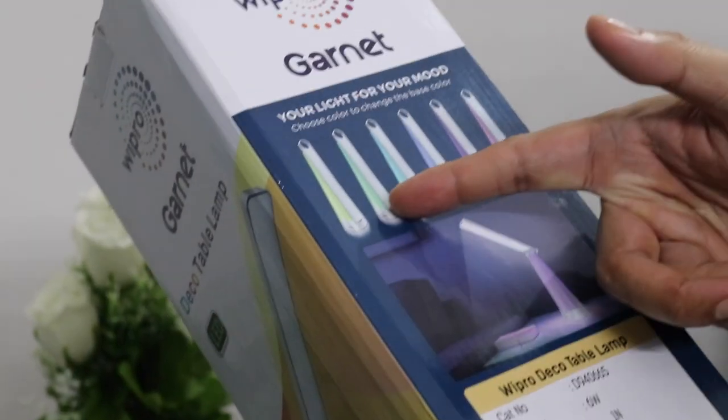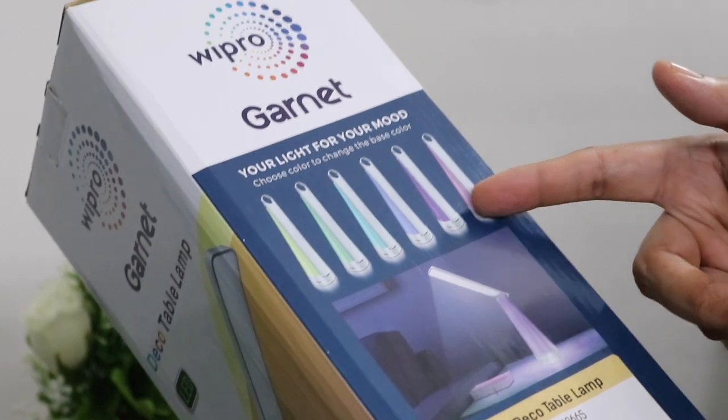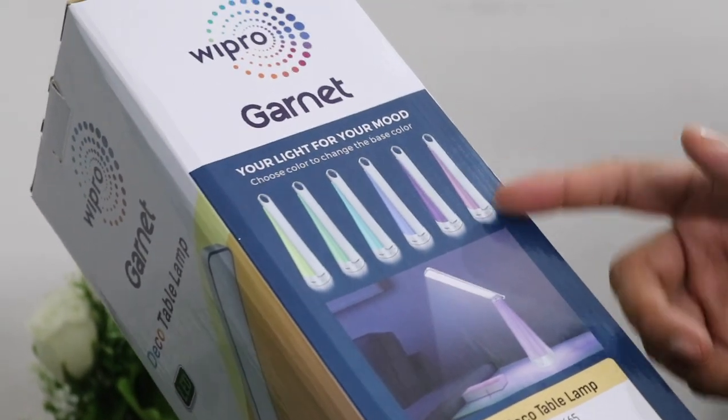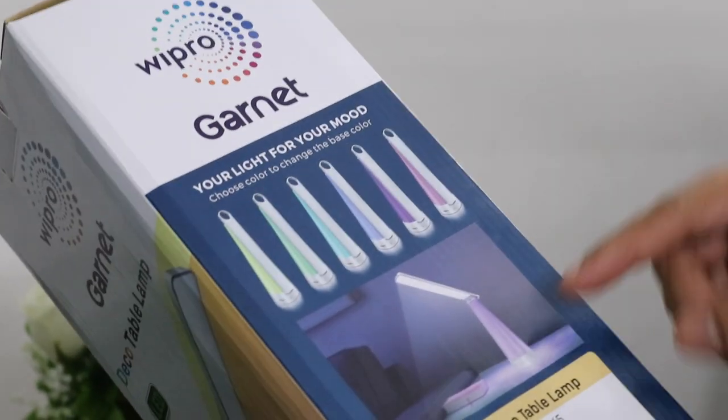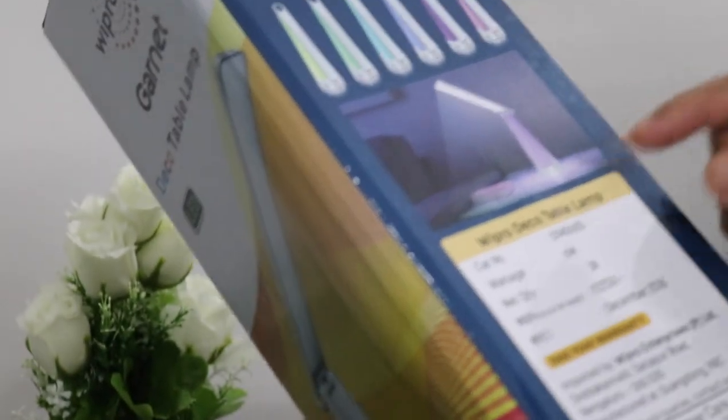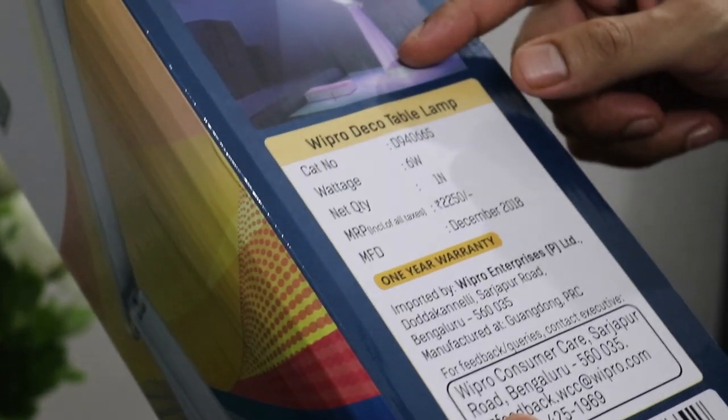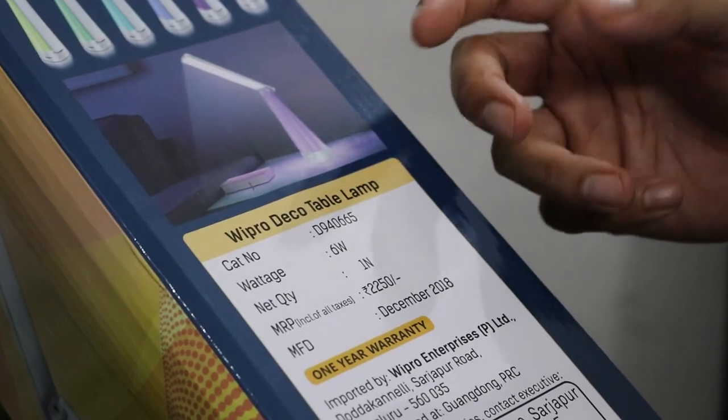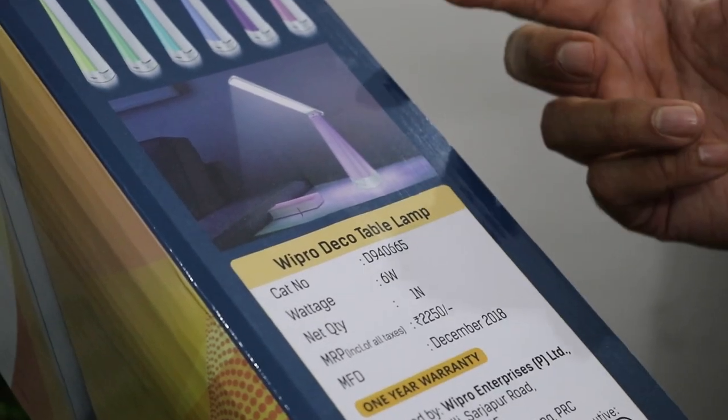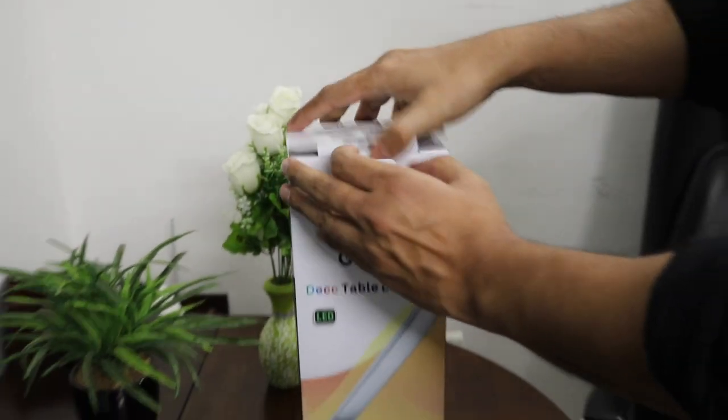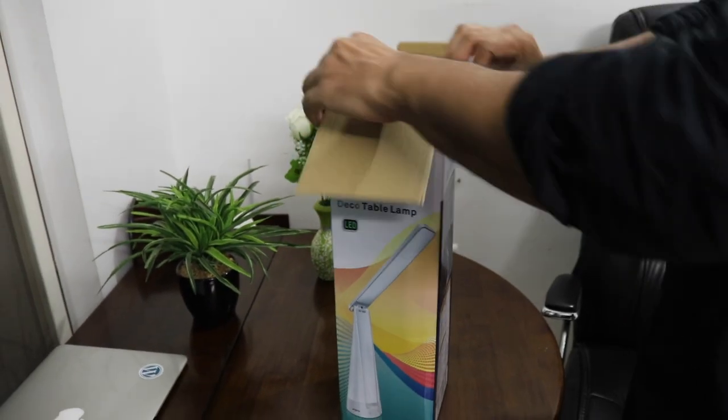If you have a look at it, you can see that you can change colors. There are different options of colors available, and the best part is that it's all touchscreen. You have buttons on this device itself, and it's going to be very useful because it's just touchscreen. So let's go ahead and unbox it without wasting any time.